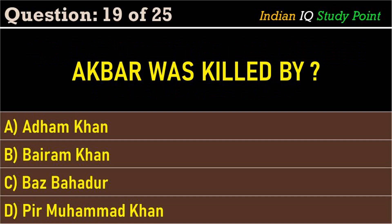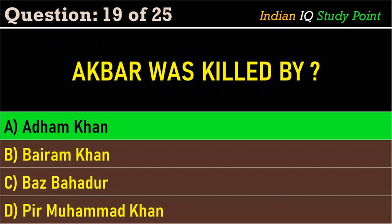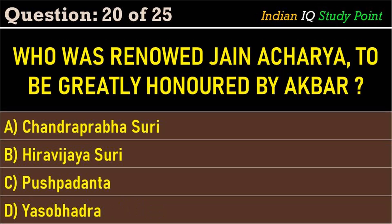Coming to the next question: Akbar's minister was killed by — Option A. Adham Khan, B. Bhairam Khan, C. Baj Bahadur, D. Pir Mohamed Khan. And the correct answer is Option A. Adham Khan.